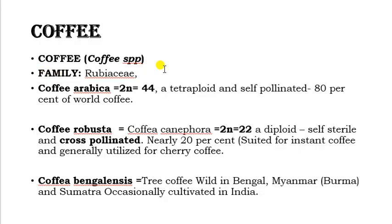There are two main species of coffee mostly cultivated. The first is Coffee arabica, having chromosome number 2n equal to 44. It is a tetraploid species and self-pollinated, accounting for nearly 80% of the world's coffee.